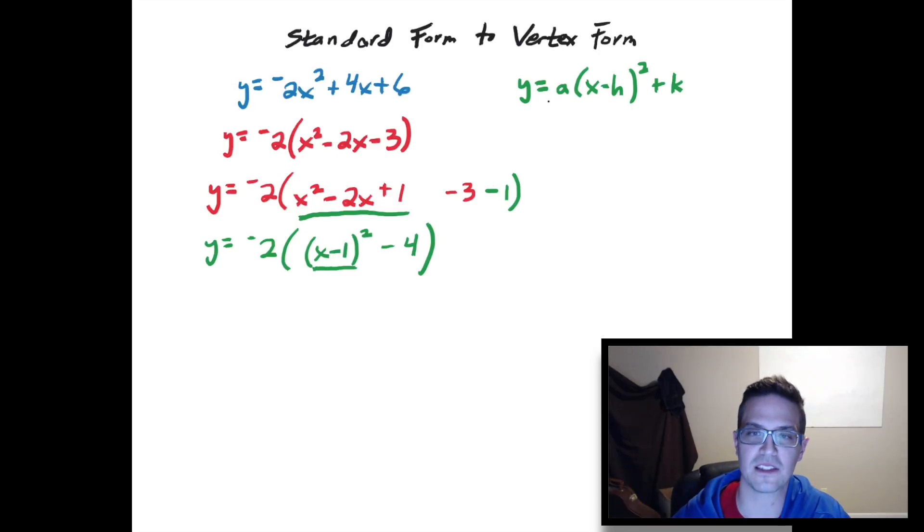From here it's starting to look more and more like this vertex form, but there is one more thing that we're going to have to do here, and that's distribute this negative 2 out to each of these terms. So that's what we're going to do here. So you'll have negative 2 times this x minus 1 quantity squared, and then this negative 2 times this negative 8 here, and then that would be a plus 8.